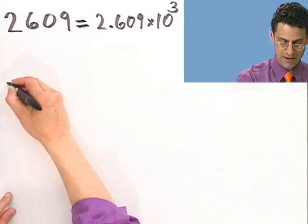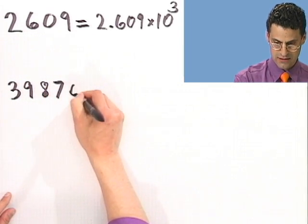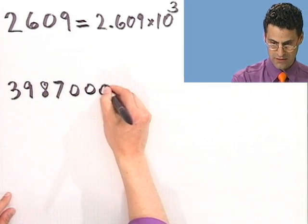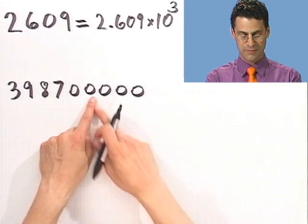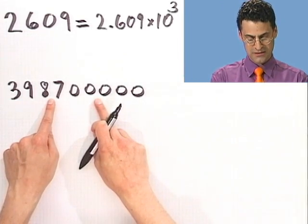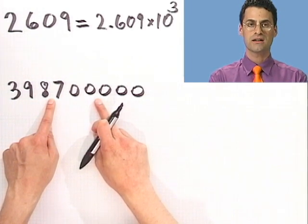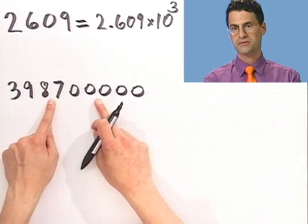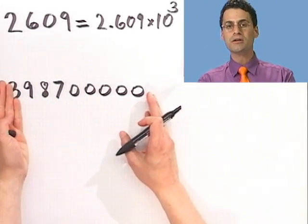Let's try some really dramatic numbers. So let's say we take this number, 398,700,000. How would you read that number? It looks to me like 398,700,000. But there's a lot of zeros there. It takes up a lot of room.